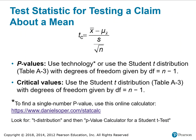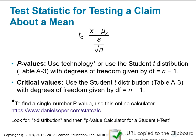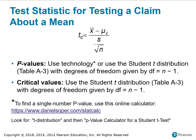The test statistic is a t-test, calculated using the formula shown. For p-values, using technology, or use the Student t-distribution Table A3 with degrees of freedom given by df equals n minus 1. For critical values, also use Table A3 with df equals n minus 1. To find the single number p-value, use the online calculator and look for the t-distribution p-value calculator for a Student t-test.